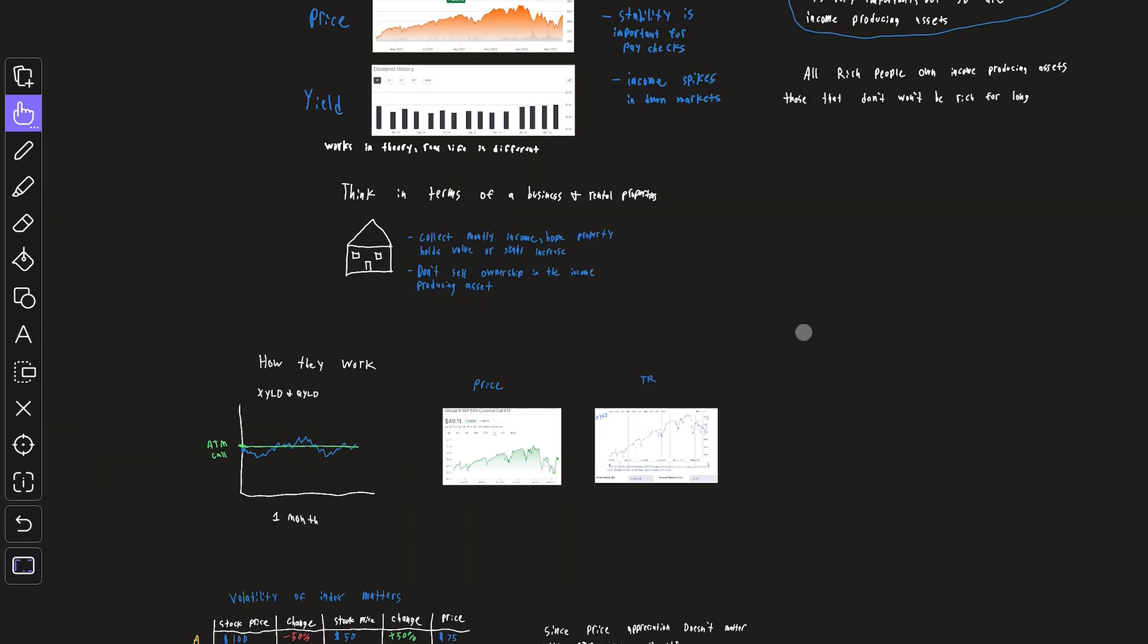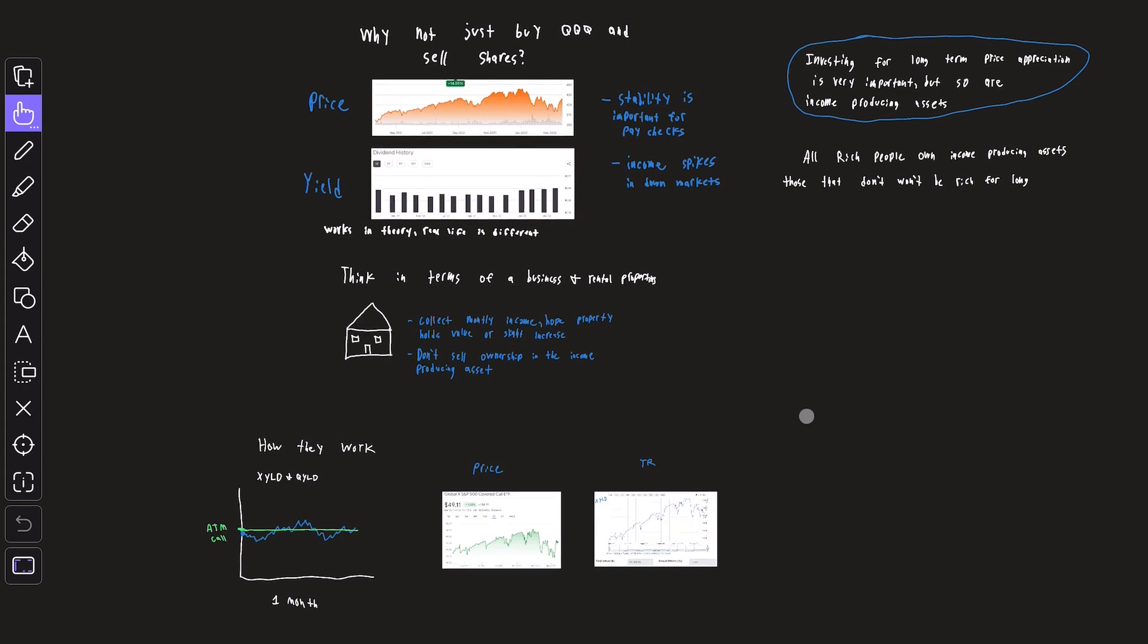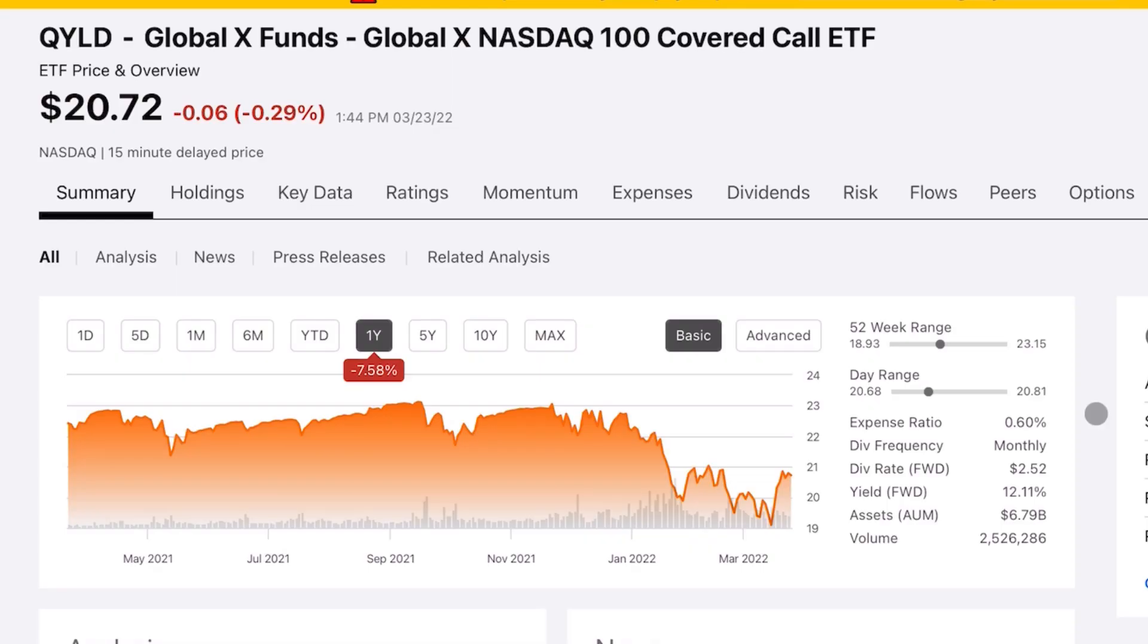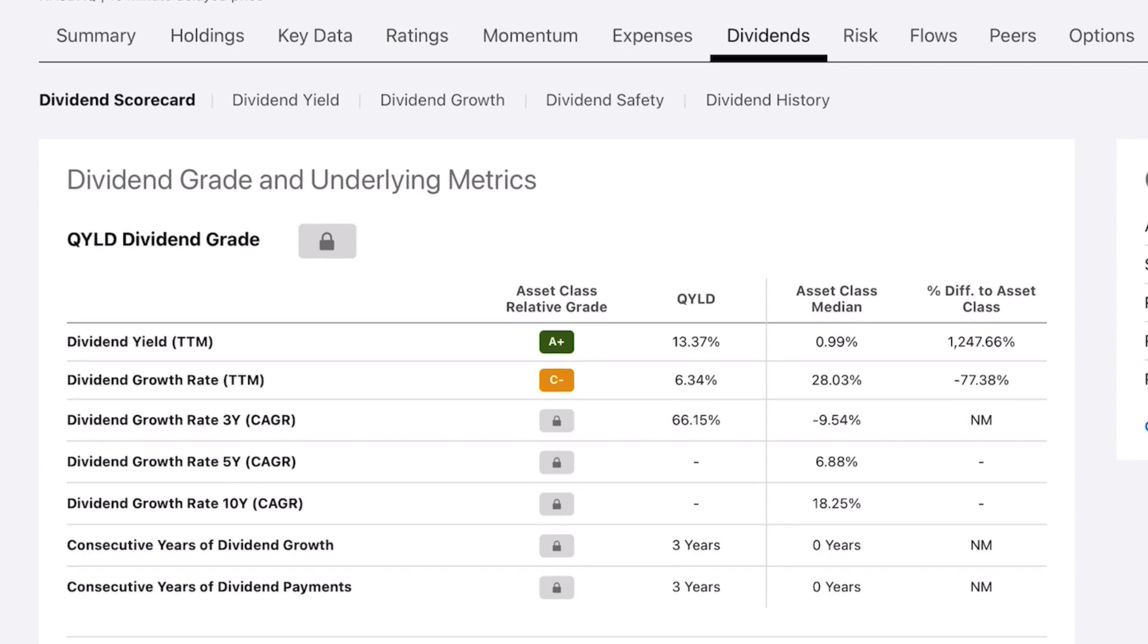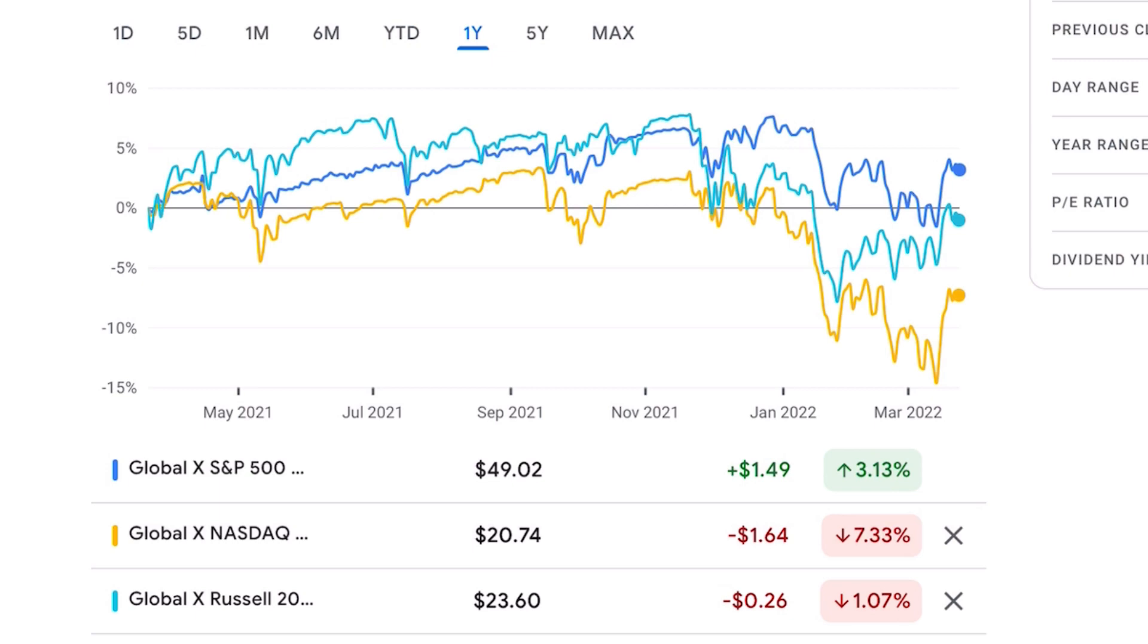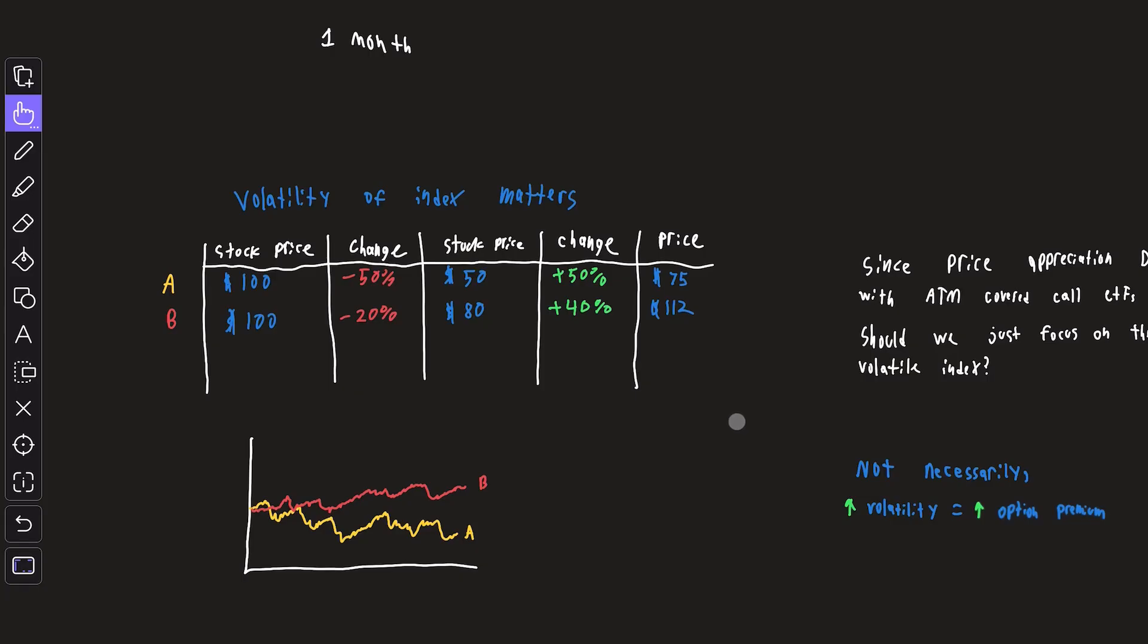So with this strategy, it seems like volatility is what matters most because that's what generates the income and thus the return. And that's why people love QYLD. It's based off the NASDAQ 100, which is very tech-heavy and thus very volatile, and it generates a 12% dividend yield. However, if you look at the performance over the past one year, XYLD has done the best, followed by RYLD, and QYLD isn't holding up as well.